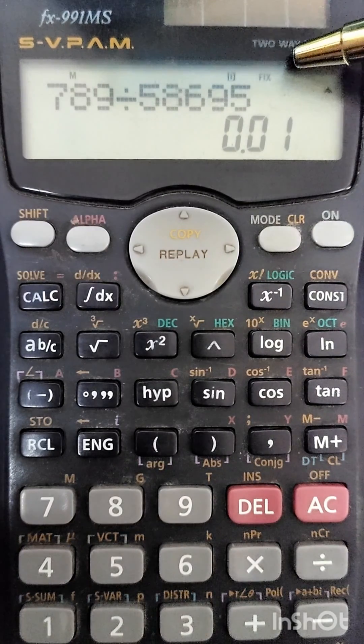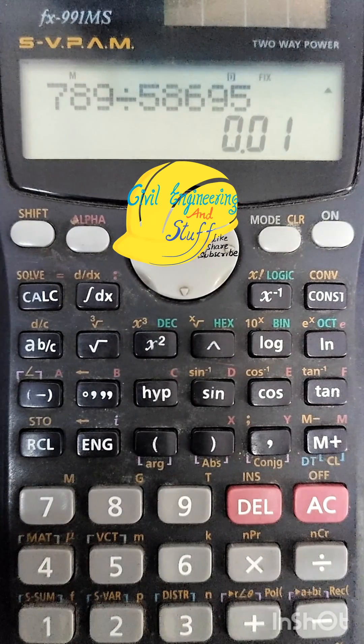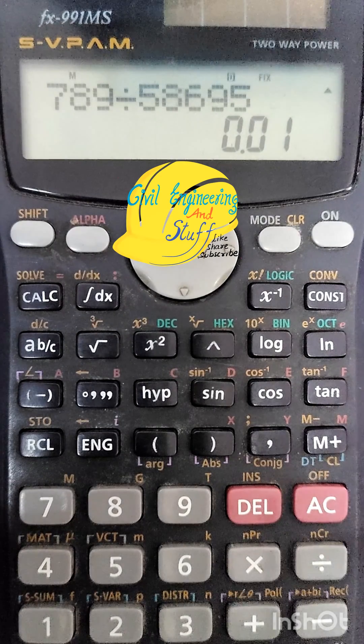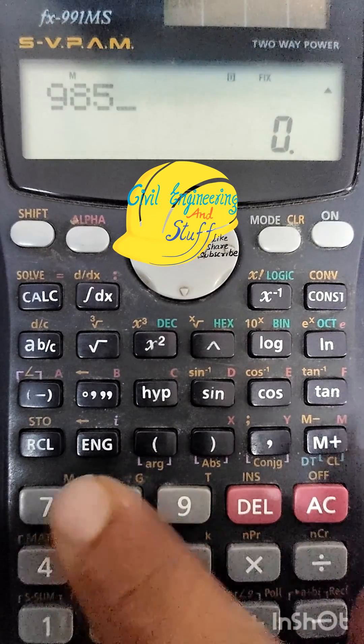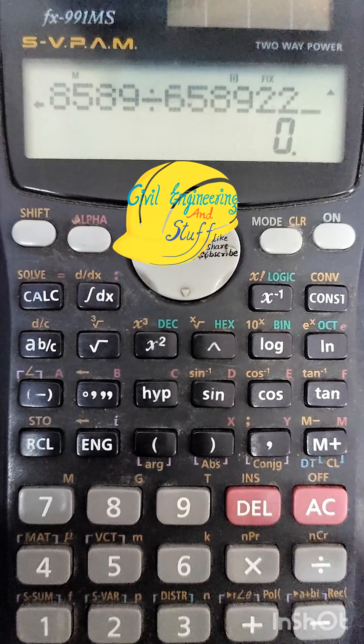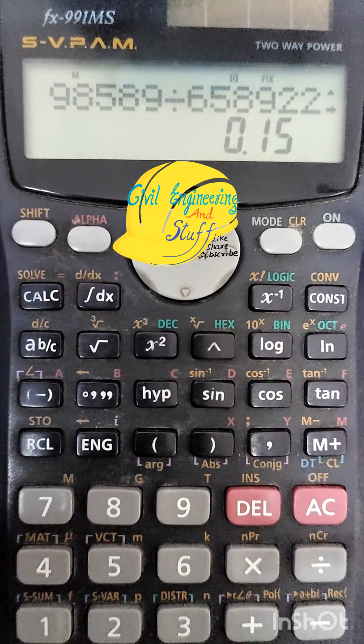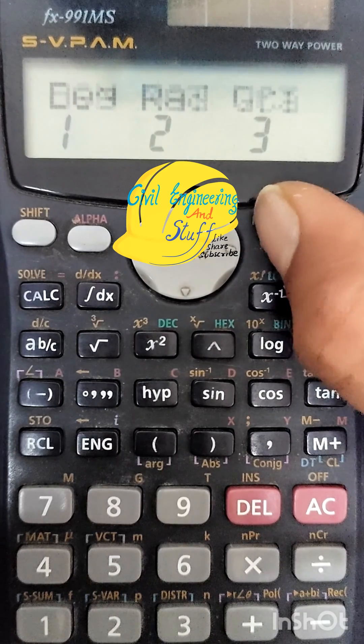One thing to note is that here now 'Fix' is written. This means the fix function has been implemented into the calculator. After this, whatever calculation I do, the values that I will get after decimal will be only two. I can increase it to three again by following the same procedure.